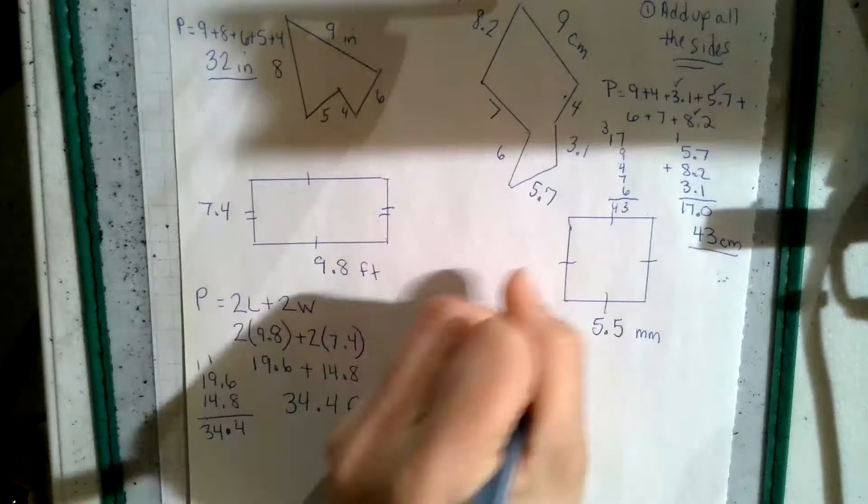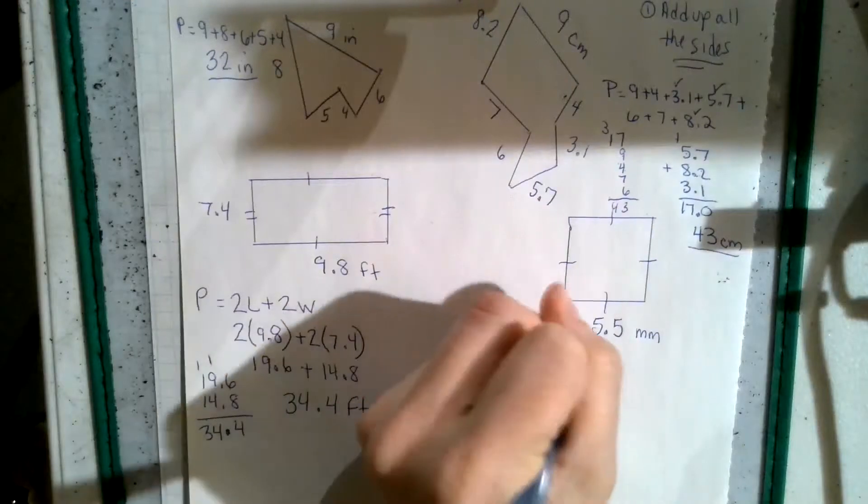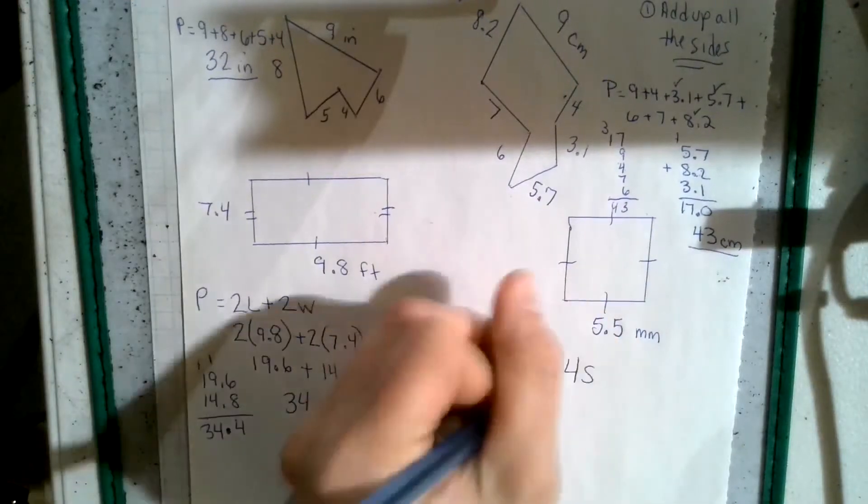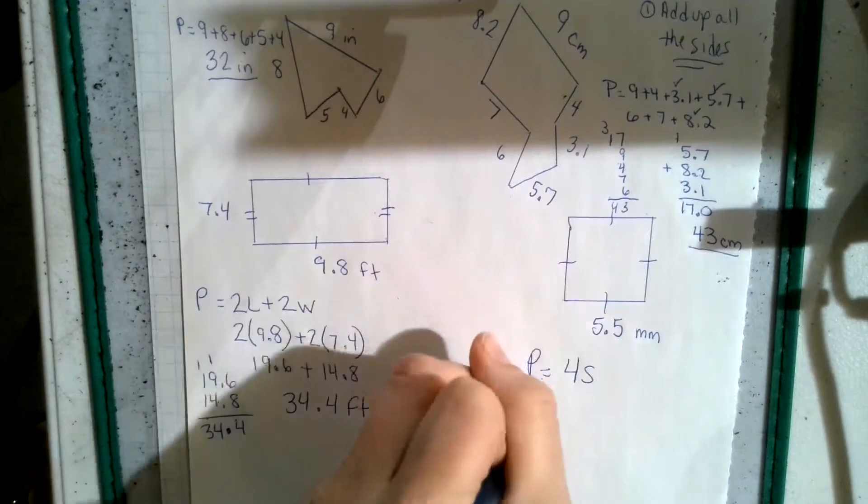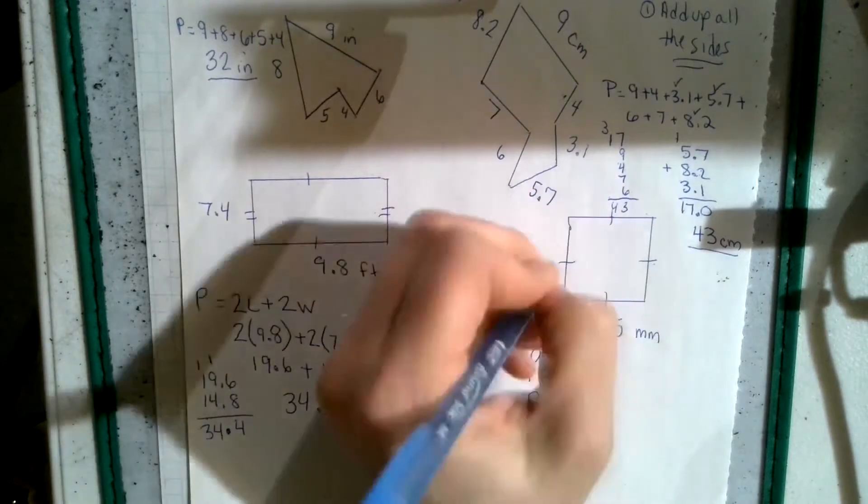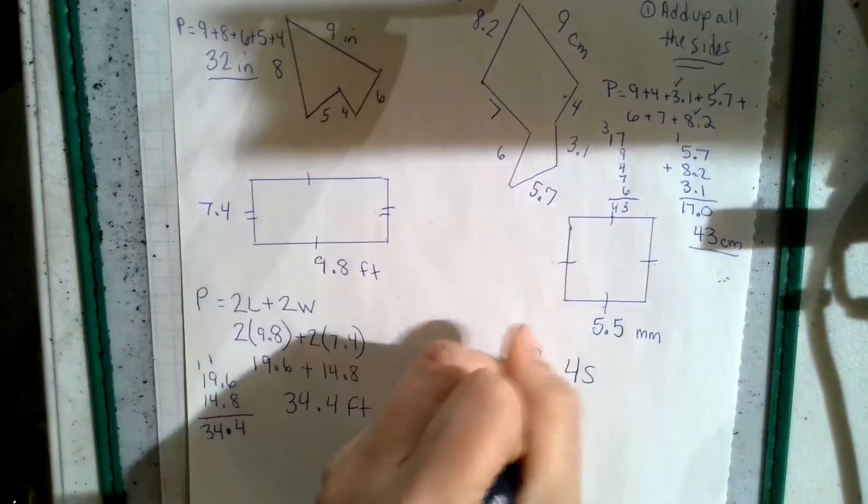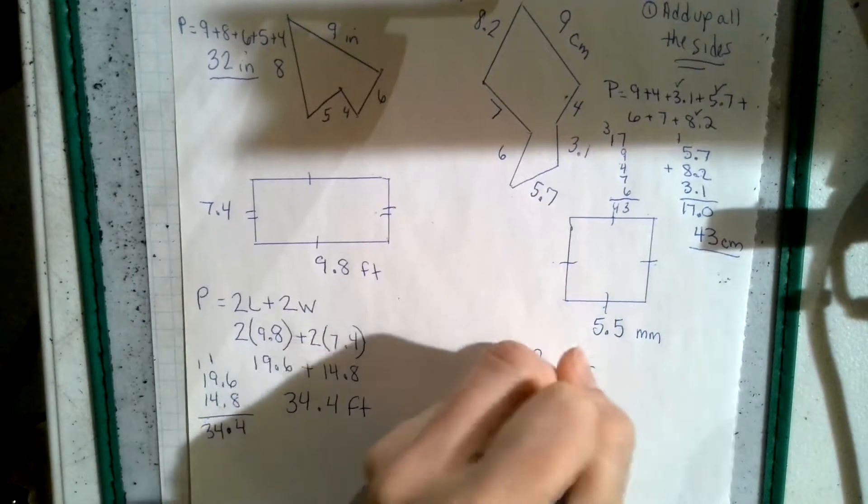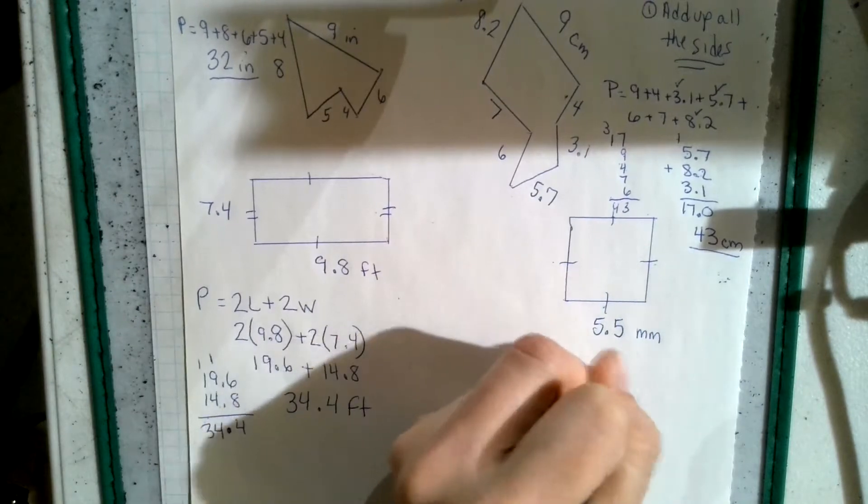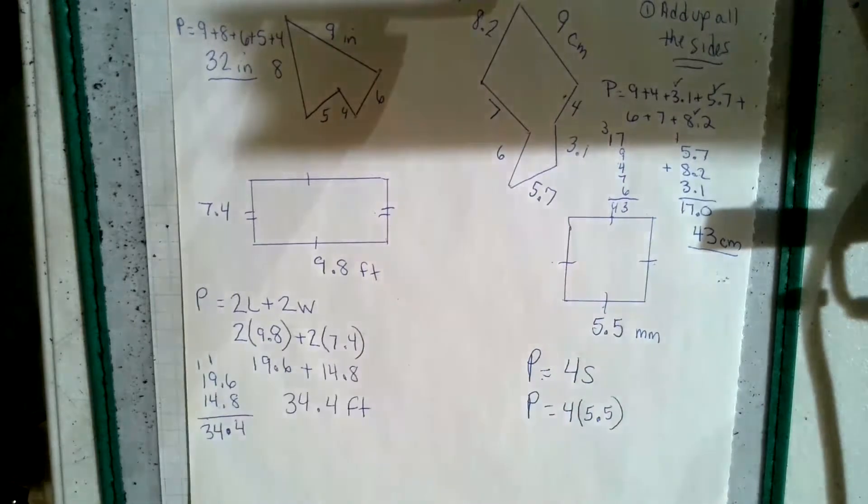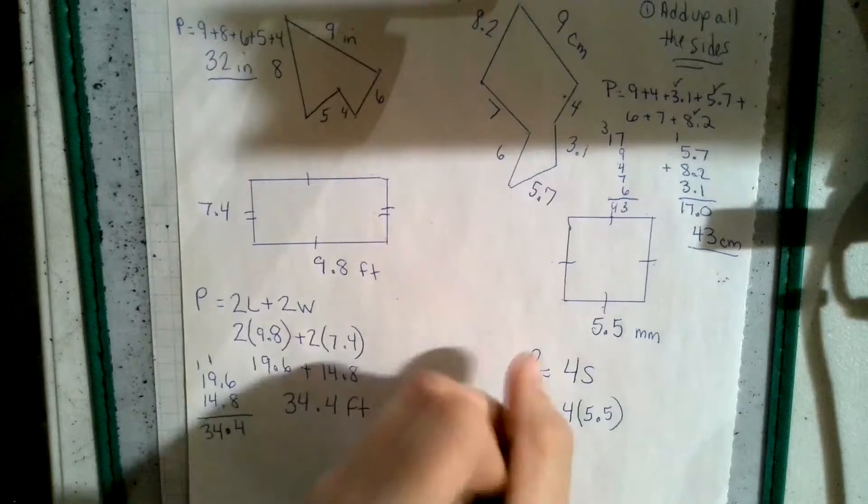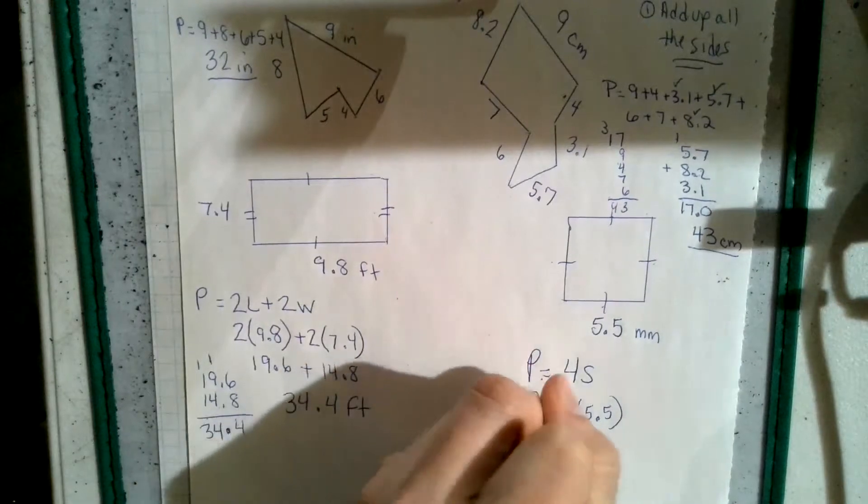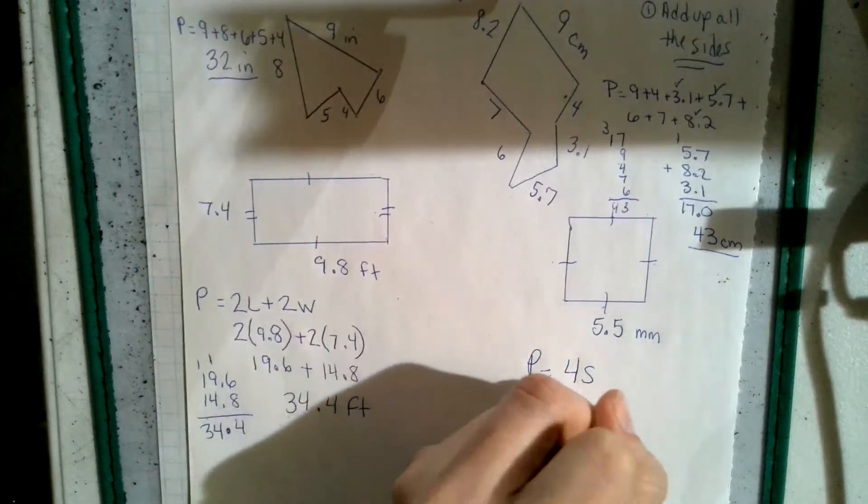So square is perimeter equals four S's, four times the sides. Because we know the square has all the same sides. See how the tick marks are all the same. So we literally have four times the length of a side. That's perimeter. So we're really only going 5.5, five and five tenths times four. So perimeter would equal 22 millimeters.